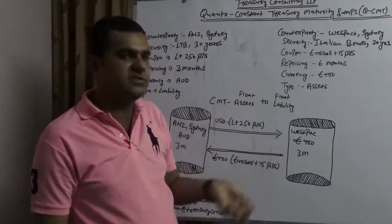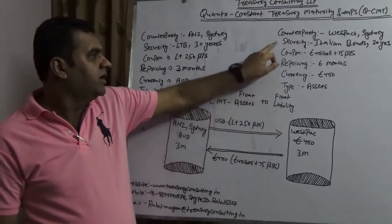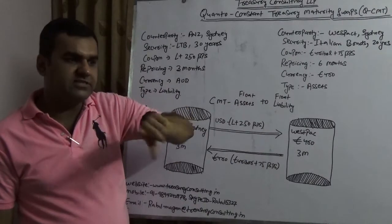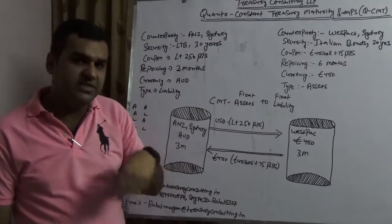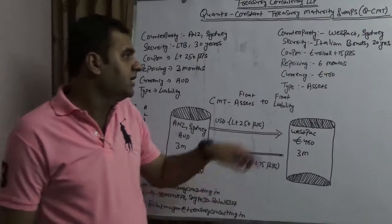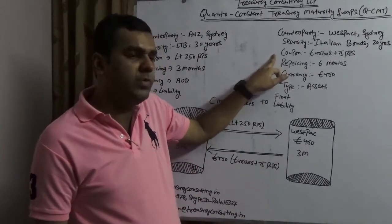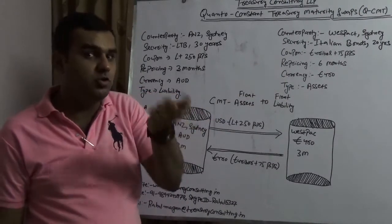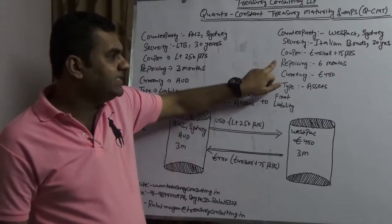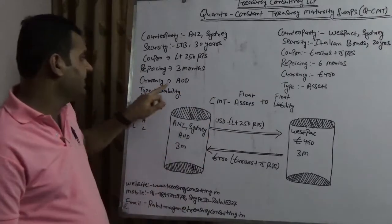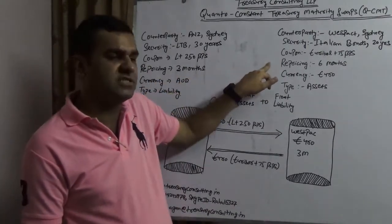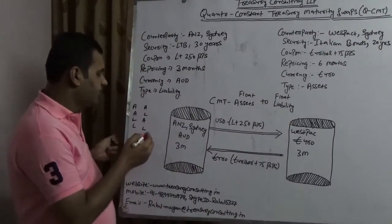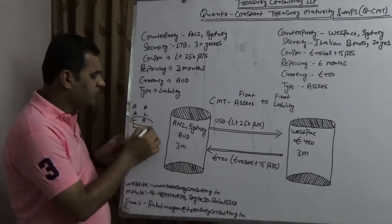Another side you have Westpac, which is again an Australian bank. Here the security is Italian bonds. It means it's an investment. Westpac Sydney invested in Italian bonds, but they are getting coupon in Euro, Euribor plus 75 basis point. So they are getting money in Euro. Repricing in six months - here the repricing is three months, here the repricing is six months. Currency is Euro, type is an asset. So one side you have a liability and one side you would have an asset.